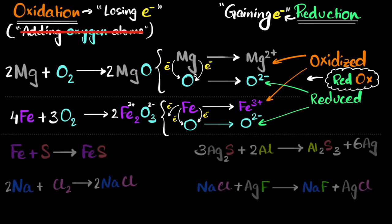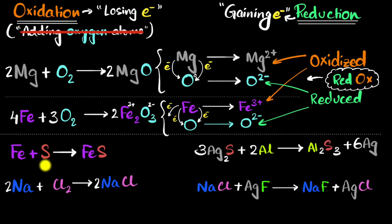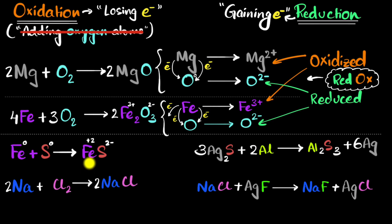Let's analyze a few reactions. Take iron reacting with sulfur to give iron sulfide. Iron is a metal so it loses electrons — iron starts at zero charge, sulfur starts at zero charge. Sulfide usually has a charge of −2, so iron must have gotten +2, meaning iron lost two electrons and sulfur gained two electrons giving you iron 2 sulfide. Iron is the one that lost electrons, so iron got oxidized. Sulfur is the one that gained electrons, so sulfur is reduced — sulfur's charge has reduced, so sulfur underwent reduction.